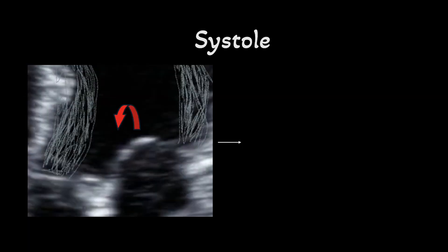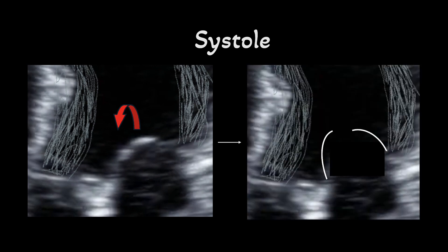This vacuum effect will suck other structures into the LVOT during systole. The structure closest to the LVOT is the mitral valve, especially the anterior mitral valve leaflet. Thus, the anterior mitral valve leaflet gets pulled into the LVOT during systole. This phenomenon is referred to as systolic anterior motion of the mitral valve, also known as SAM.